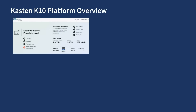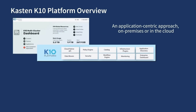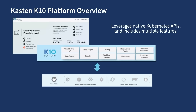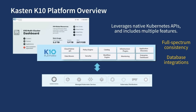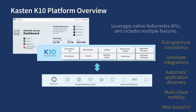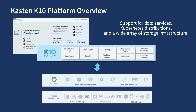Kasten K10 provides several key capabilities. First, it is built specifically for Kubernetes with an application-centric approach, whether on-premises or in the cloud. Second, the application leverages native Kubernetes APIs and includes features such as full-spectrum system consistency, database integrations, automatic application discovery, multi-cloud mobility, and an intuitive web-based user interface. Finally, it provides strong support for data services, Kubernetes distributions, and a wide array of storage infrastructure.